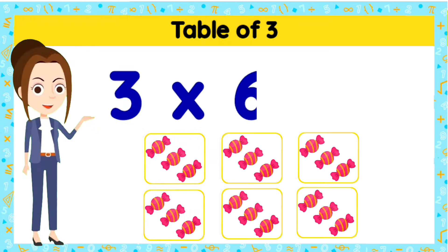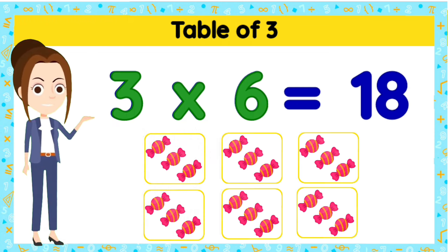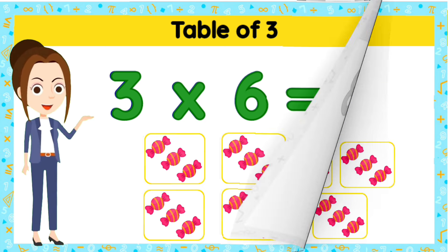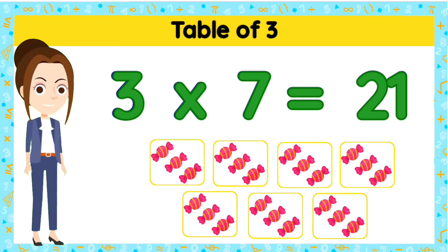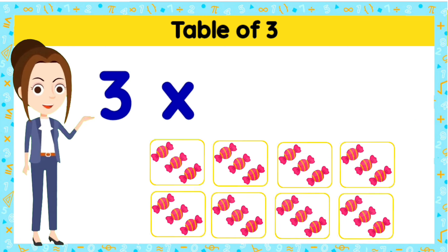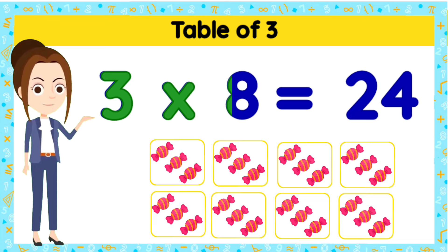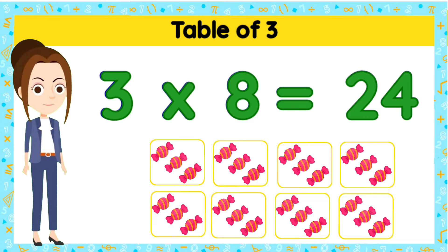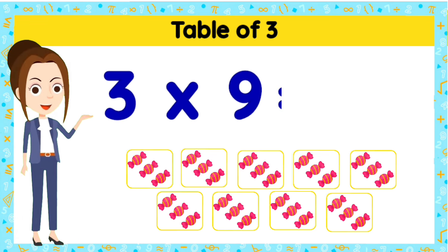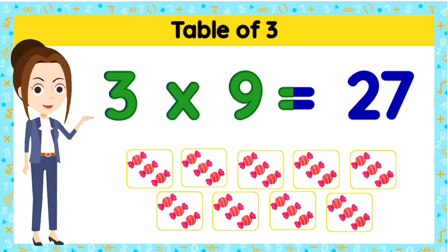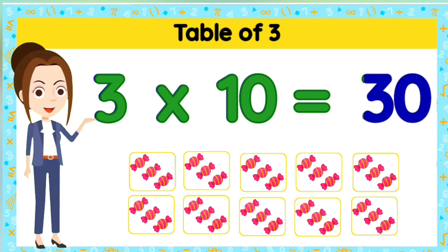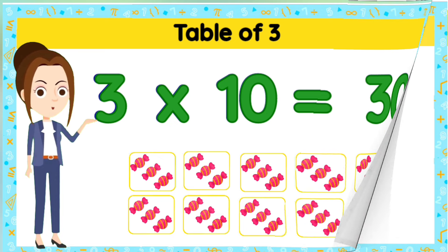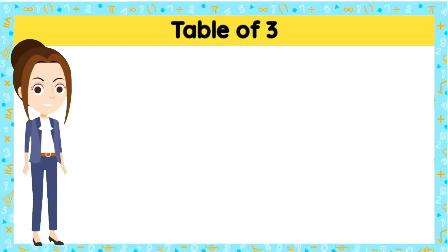Three sixes are eighteen. Three sevens are twenty-one. Three eights are twenty-four. Three nines are twenty-seven. And three tens are thirty.